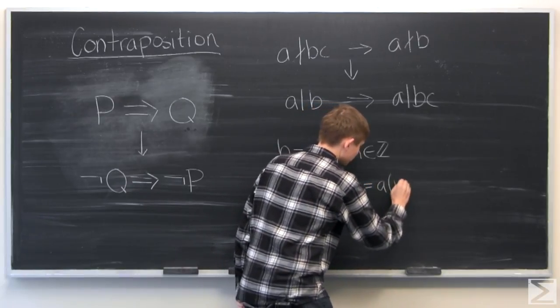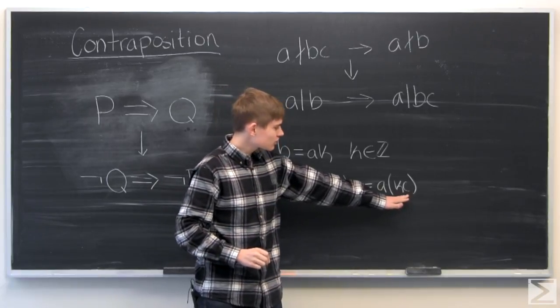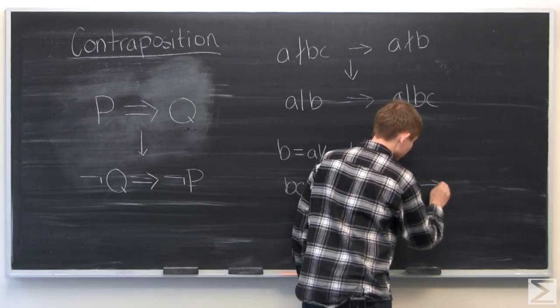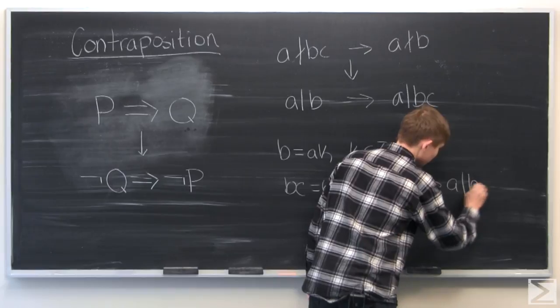Which we can rearrange a little bit and show that this is just a multiple of a, since k times c will be an integer, which means therefore that a will divide b times c.